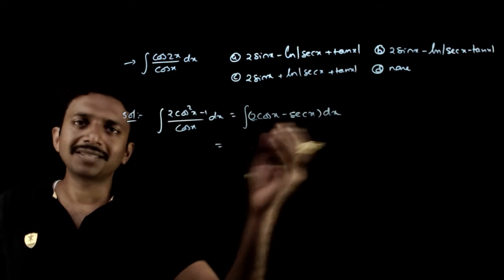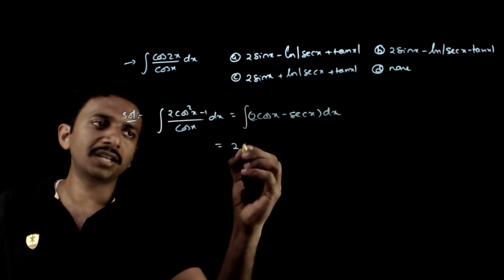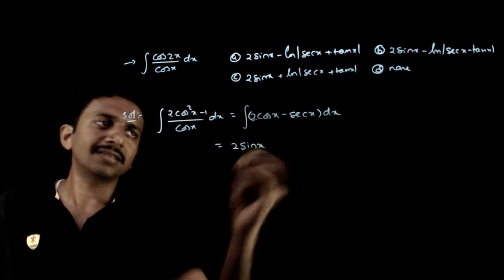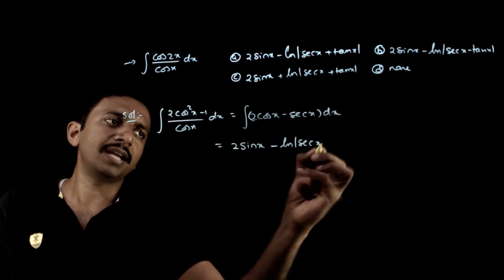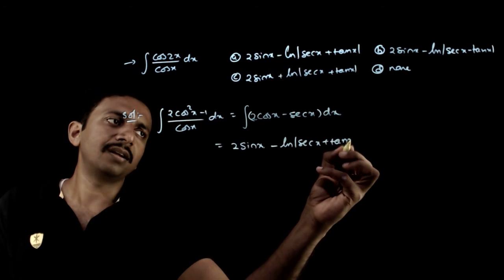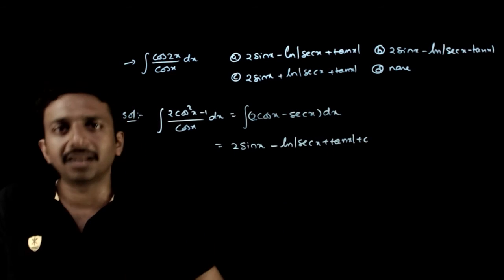Now you can integrate these individually. Two times the integral of cos x is 2sin x, minus the integral of sec x is log of sec x plus tan x, plus the integration constant.